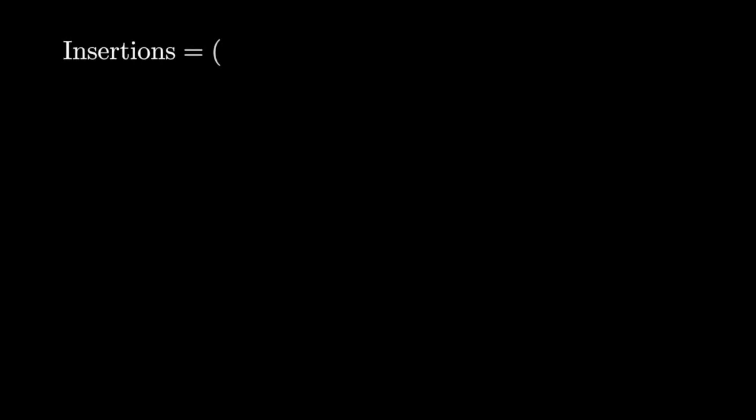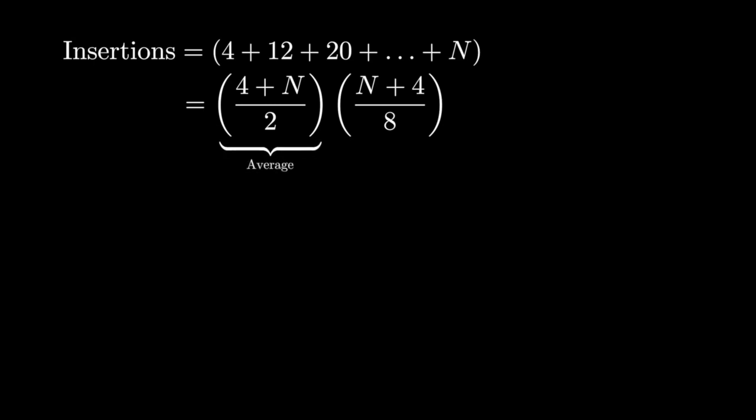I don't want to get too deep into the matrix used here, since it's not really the point, but a quick summary is that since the sequence that we have here is a sum of evenly spaced numbers, we can calculate the average and multiply it by the number of elements in the sequence.